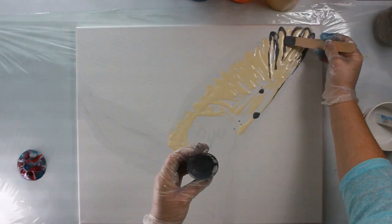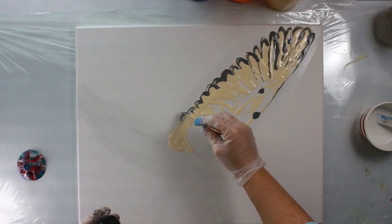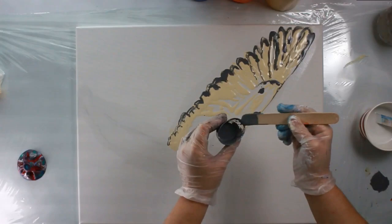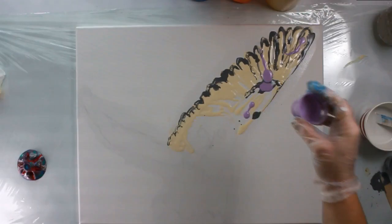My mixture, you can find down below, but I typically use one part paint, two parts Floetrol, and a little bit of water, maybe like a quarter. Really just depending on the consistency of the paint. So if it's a thicker paint I may use a little more water.